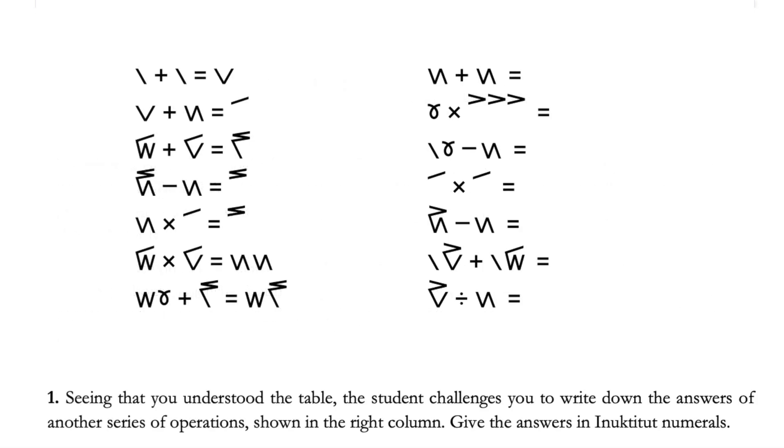Our first question here is to write down the answers for the operations on the right. As you can see, the strokes do look quite different to the left column, meaning that we will need to decipher the left column first. For convenience, we will label the left column as shown.